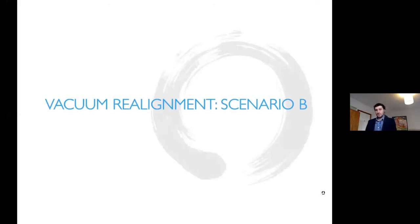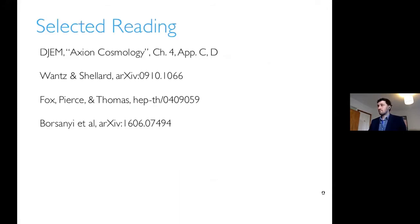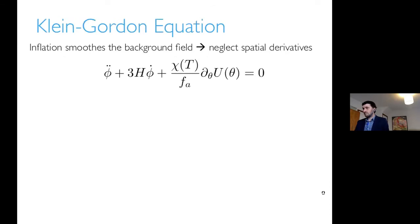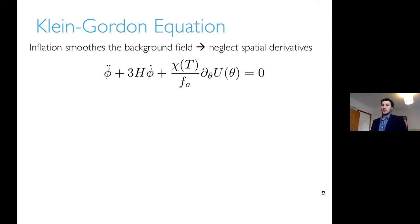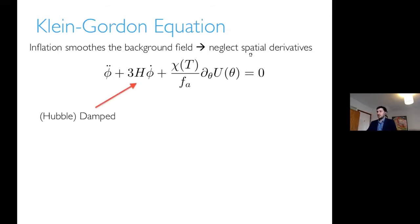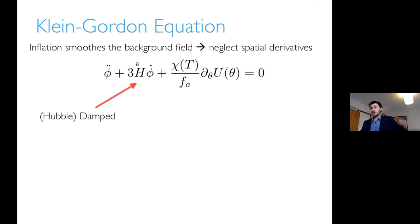I'm going to tell you about scenario B first, because it's the simplest one where we can compute pretty much everything. In scenario B, inflation smooths the background field so we can neglect spatial derivatives of the field completely. For the QCD axion, the Klein-Gordon equation now takes the form of a general damped harmonic oscillator, where the Hubble term plays the role of the damping coefficient, which falls over time — so you can have the field transitioning from overdamped to underdamped motion.